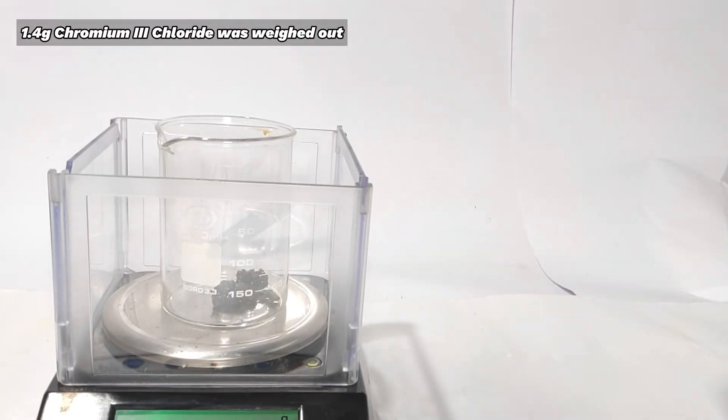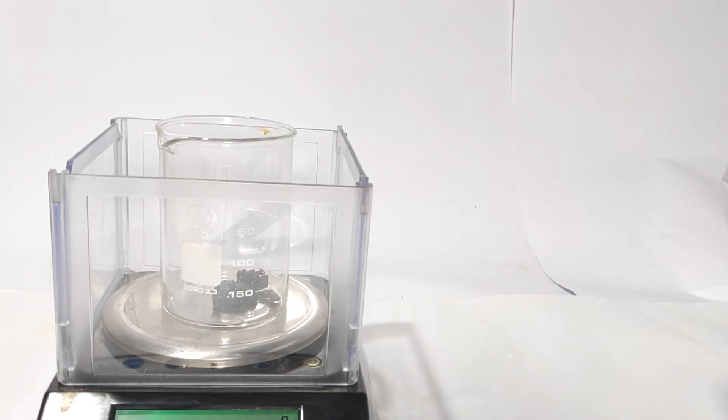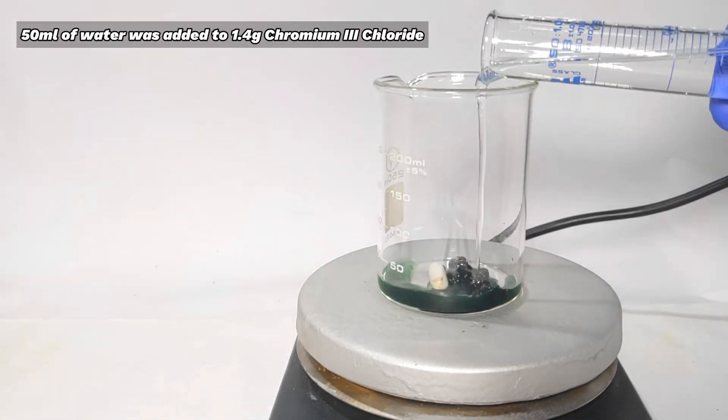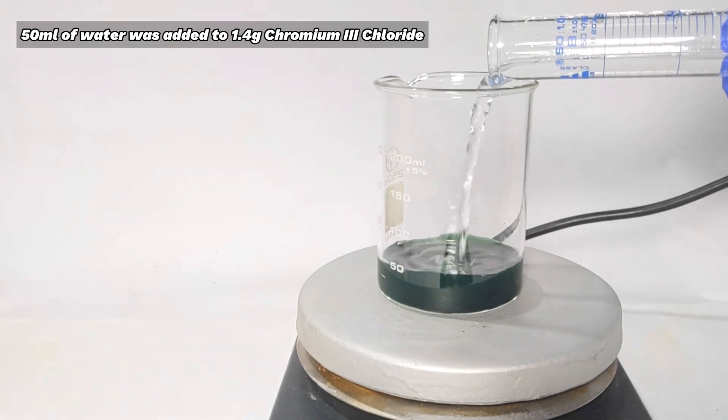Then 1.4 grams of chromium III chloride was weighed out. It is pretty hygroscopic - after a few minutes of keeping it open it has already absorbed water. A 250 milliliter beaker was placed on a hot plate stirrer with a stirring bar inside.